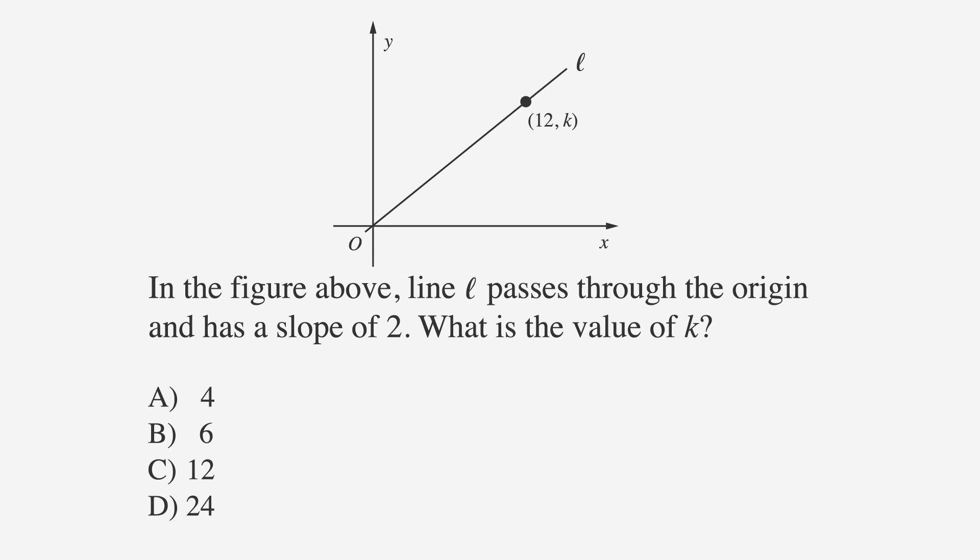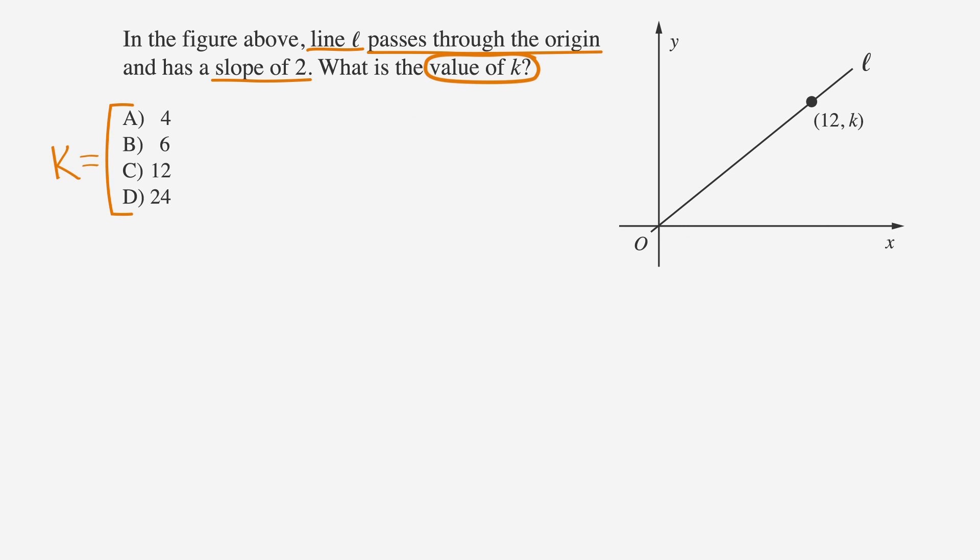Our answer choices are a, 4, b, 6, c, 12, and d, 24. As always, underline the facts, circle the key words, and label the answers. We're told that the slope of our line is 2, and that the line goes through the origin, or the point 0, 0. We're also told that line L passes through the point 12, k.